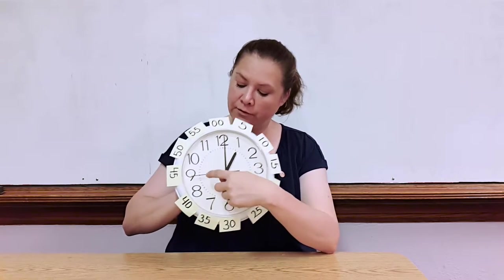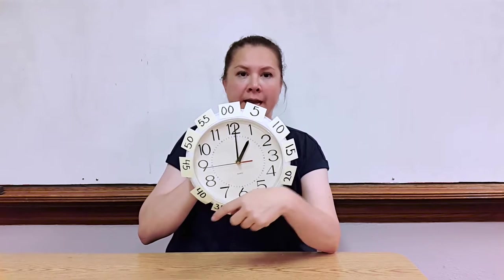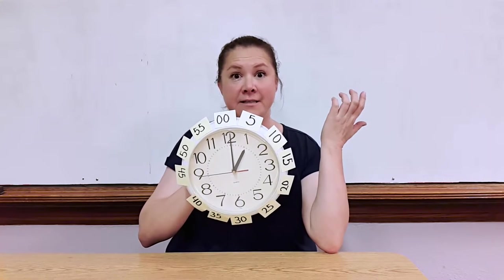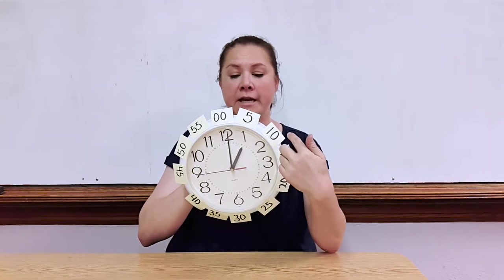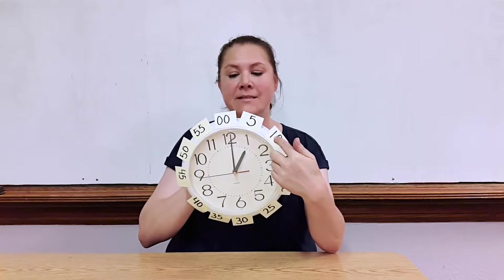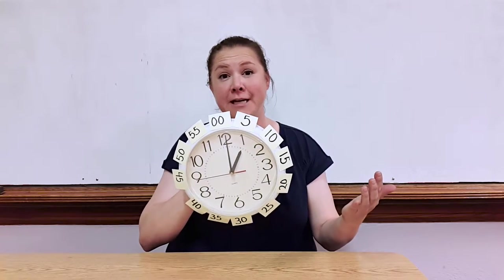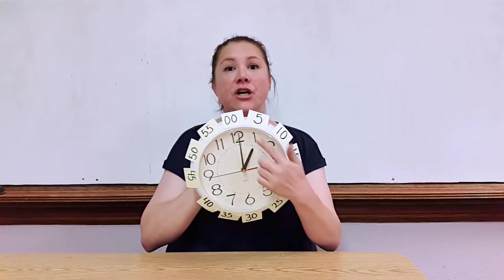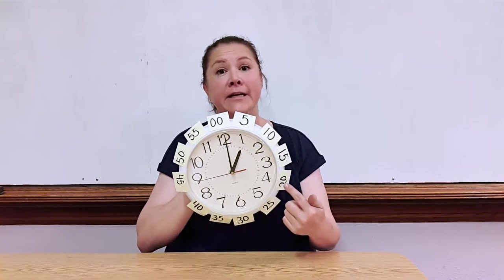And then finally you have this long red hand, which is the second hand, which moves the fastest for the kids to watch. You don't say it when you read the time, but it's good for them to judge the amount of time, like how long is a minute.